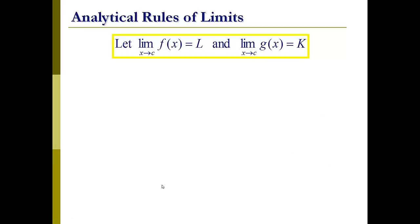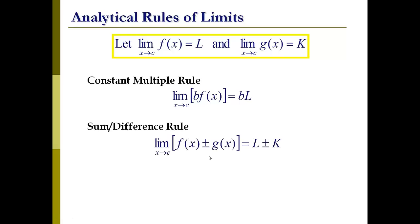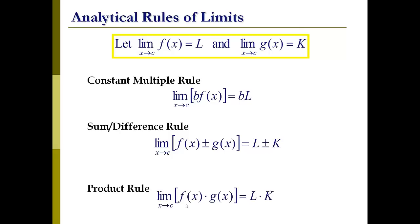Let's look at some more complex analytic rules. Take a function: the limit of f of x as x approaches c, and we'll call that limit capital L. And another function g of x as x approaches c, and we'll call that limit k — two separate functions with separate limits. The constant multiple rule says we can take the limit of any constant multiplied by f of x as x approaches c; the limit is the constant multiplied by the limit of the function. The sum and difference rule says the limit of f of x plus or minus g of x as x approaches c equals the limit of f of x plus or minus the limit of g of x. The product rule says the limit of f of x times g of x as x approaches c equals the limit of f of x times the limit of g of x.